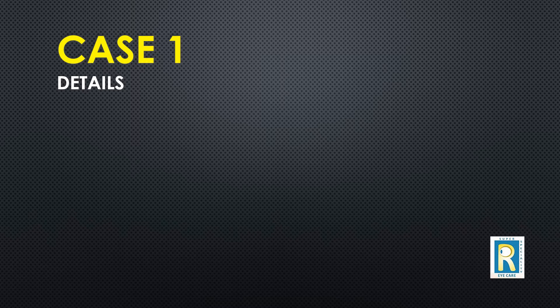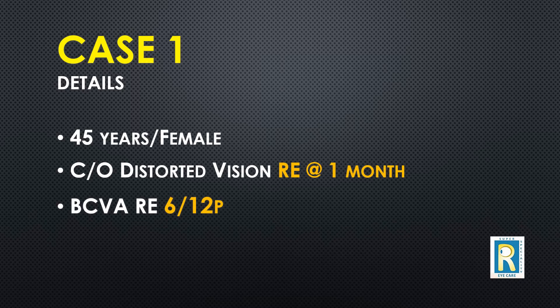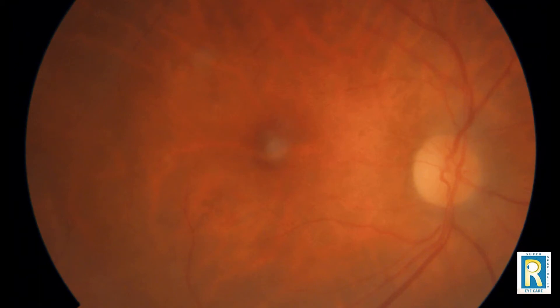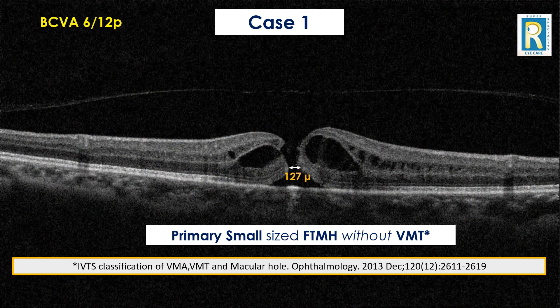Our first patient was a 45-year-old female who presented with complaints of distorted vision in the right eye for one month. Her best corrected visual acuity was 6/12. On examination, we found a vague reflex in the center of the fovea. An OCT scan showed a full thickness macular hole which was less than 250 microns in size, and there was no vitreous attachment. This was a case of a primary small-sized full thickness macular hole without vitreomacular traction.